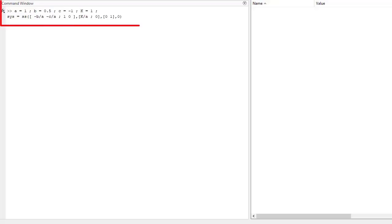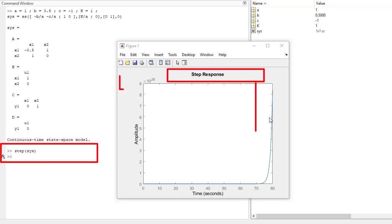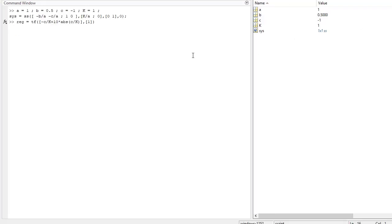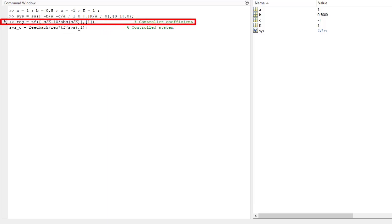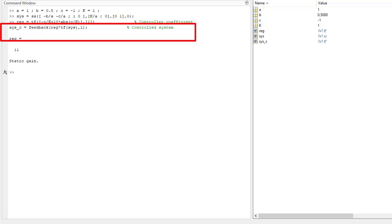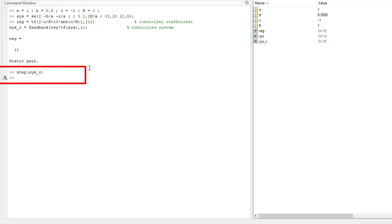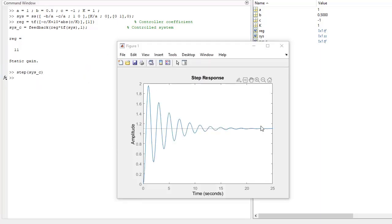Let us consider this unstable PT2 system with this unstable step response. First, we control the system with the P controller and calculate the closed loop. And if we plot the step response for this closed loop system with P controller, we will get this step response, but with oscillations.